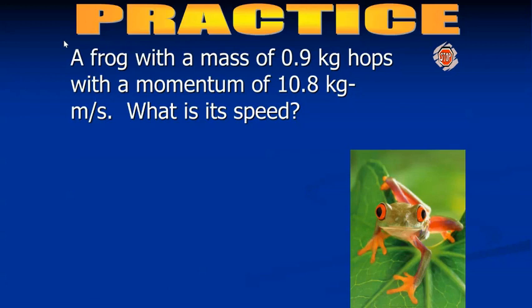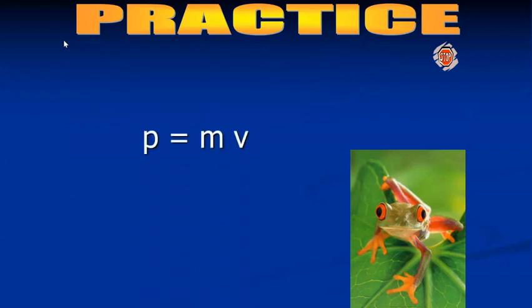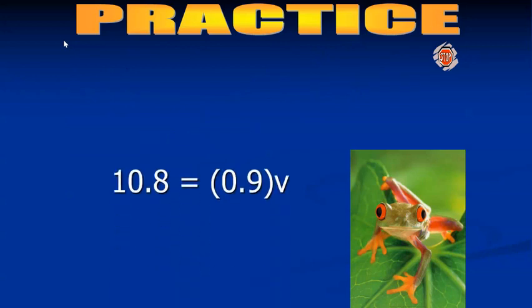Finally, last example, a frog with a mass of 0.9 kilogram hops with a momentum of 10.8 kilogram meter per second. What is its speed? So this time we're told the momentum, which goes on the left side of the equation, and we're told the mass, which goes on the right side. It's just the V that we don't know. So we'll plug in our numbers, starting with momentum equals mass times velocity.